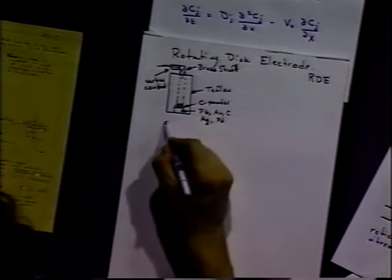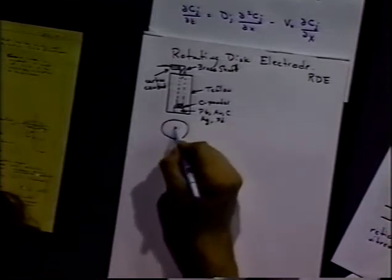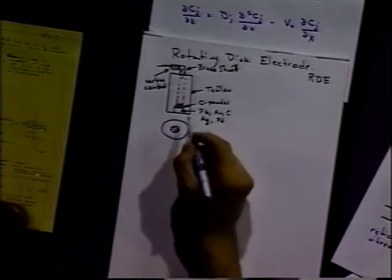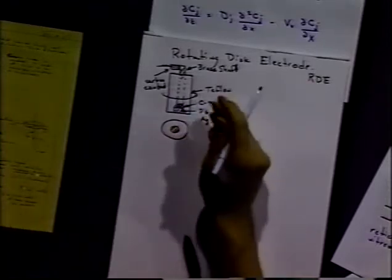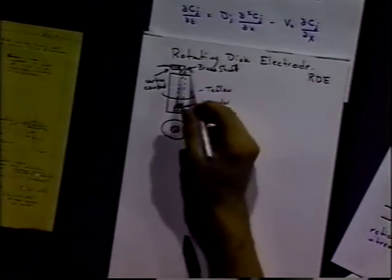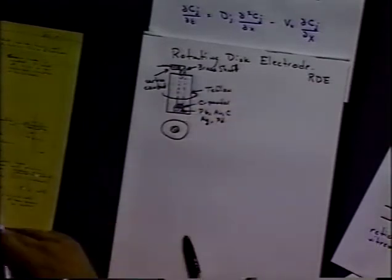So at the bottom, you'd have just a little disk of material. As its name states, it's a rotating disk electrode. Then we would stick this in a motor and rotate it at whatever rotation rate we'd like.